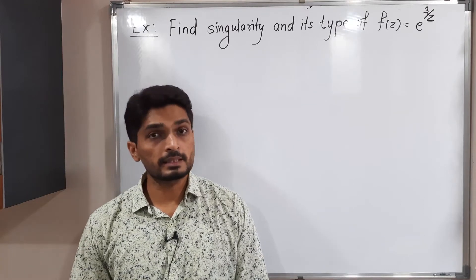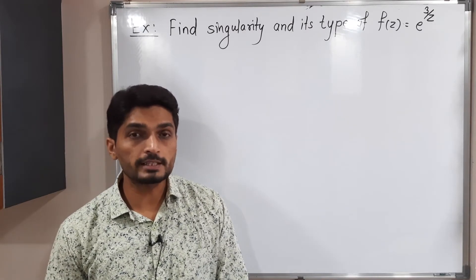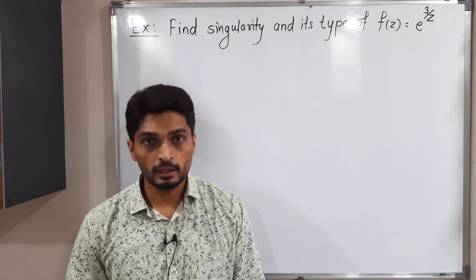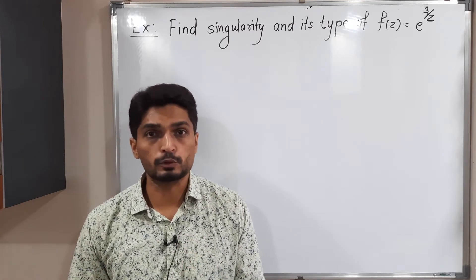Let us discuss this example. In this example, we have a function f(z) = e^(3/z). We have to find its singular point as well as its type.